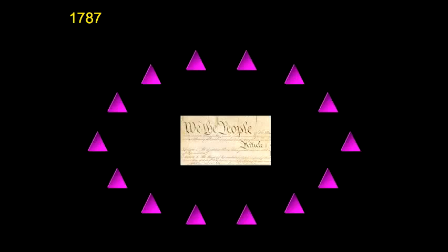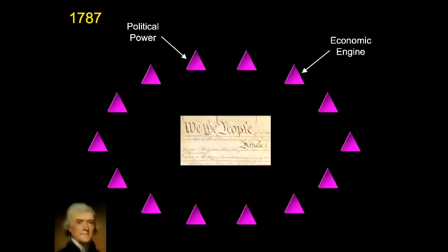The original power structure in the Republic is diagrammed here, with the states voluntarily organized around a central governing document. The states are drawn as pyramids for a deliberate reason. A pyramid represents an economic engine and growth potential, and political and social power. Each state had its own ruling class, merchant class, and working class. States had their own banks, main street businesses, and towns and neighborhoods where people exerted power together in local communities. The point is that the states were autonomous units and political power and economic growth engine were not at the federal level.